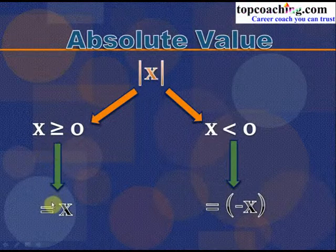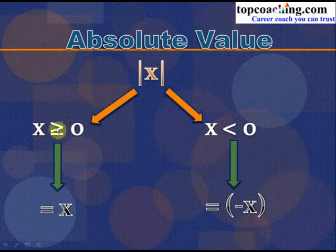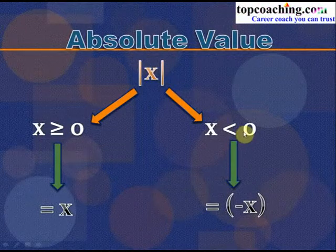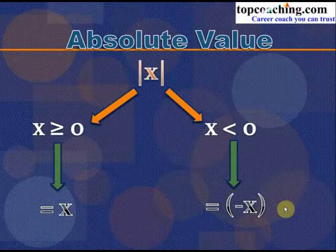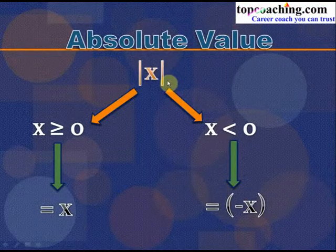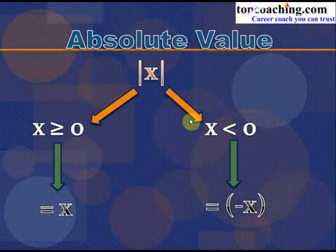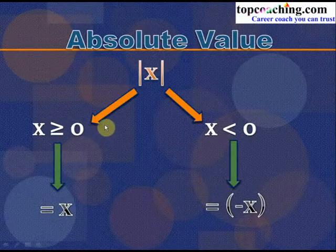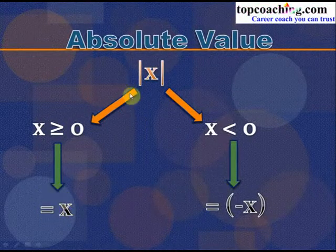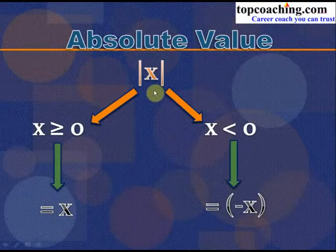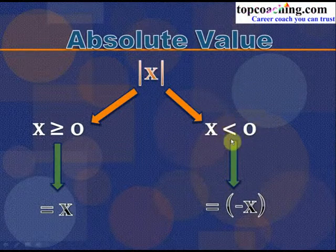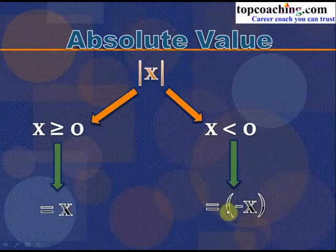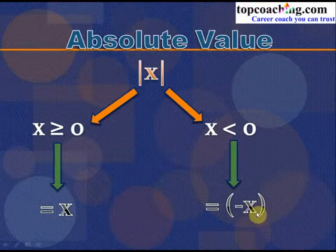Absolute value of x equals x when x ≥ 0, and equals −x when x < 0. For example, if x = 2, since x ≥ 0, |2| = 2. If x = −2, since x < 0, |−2| = −(−2) = 2.